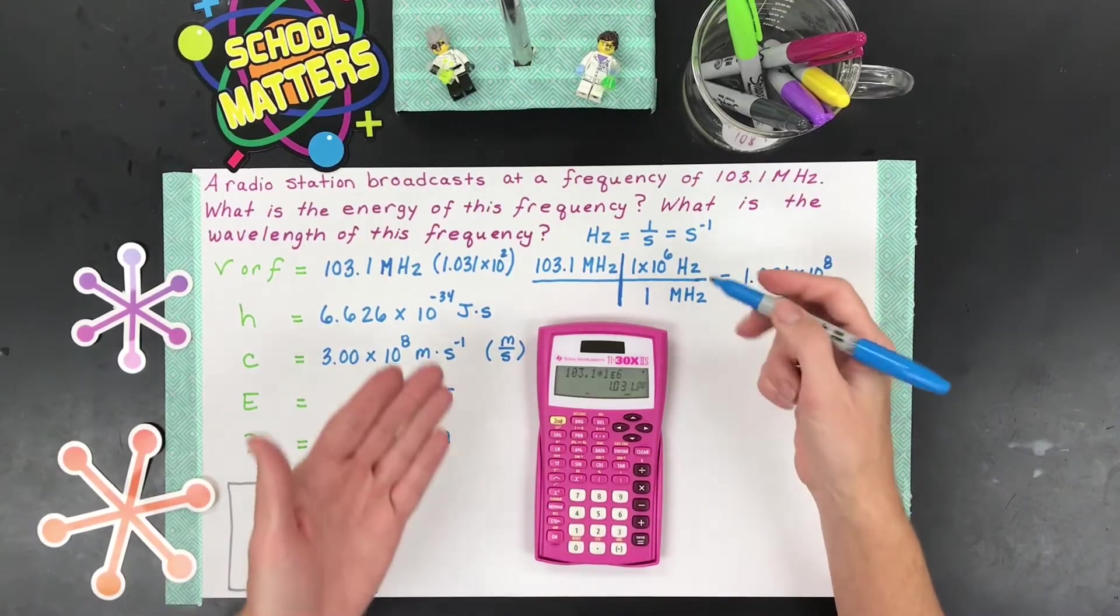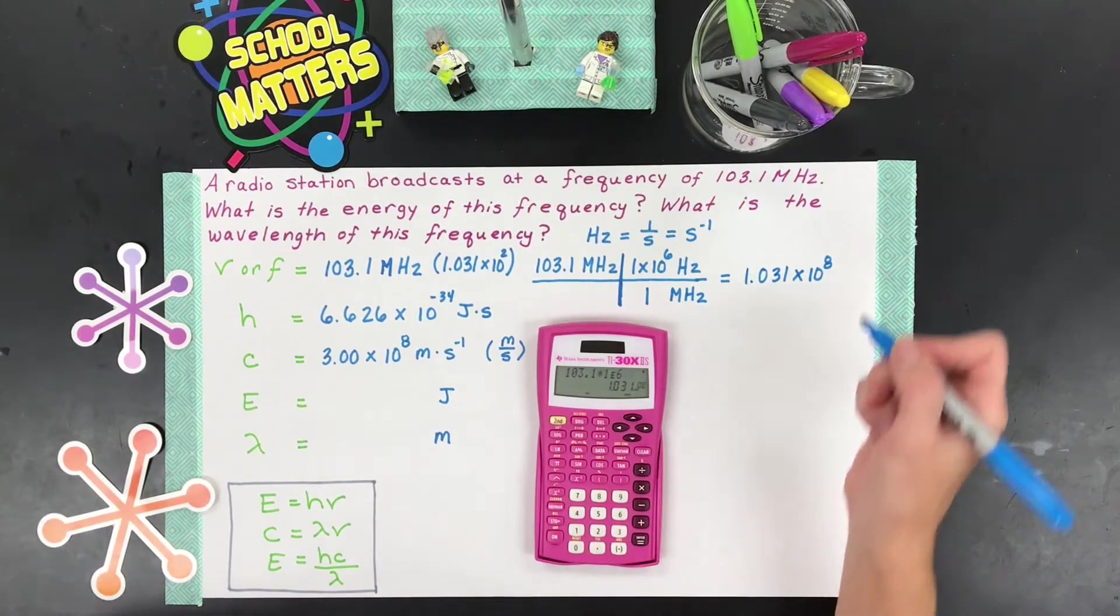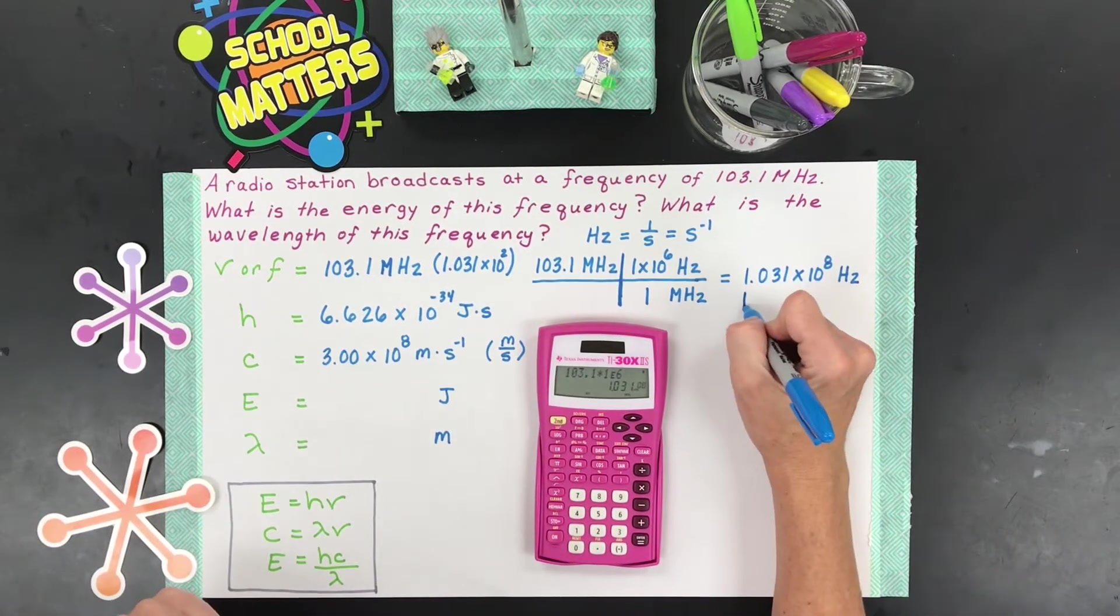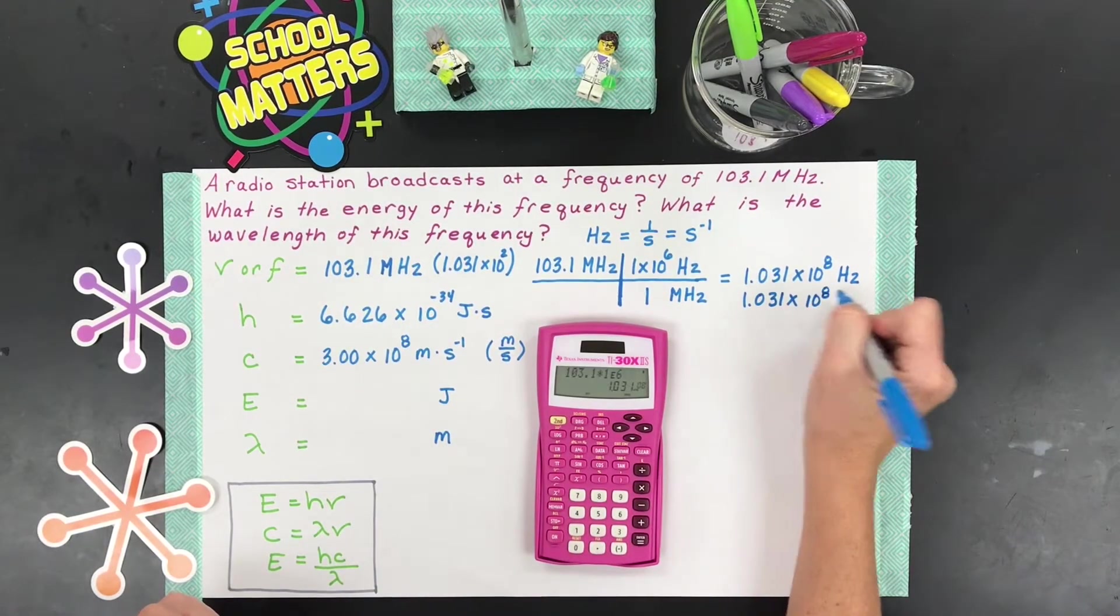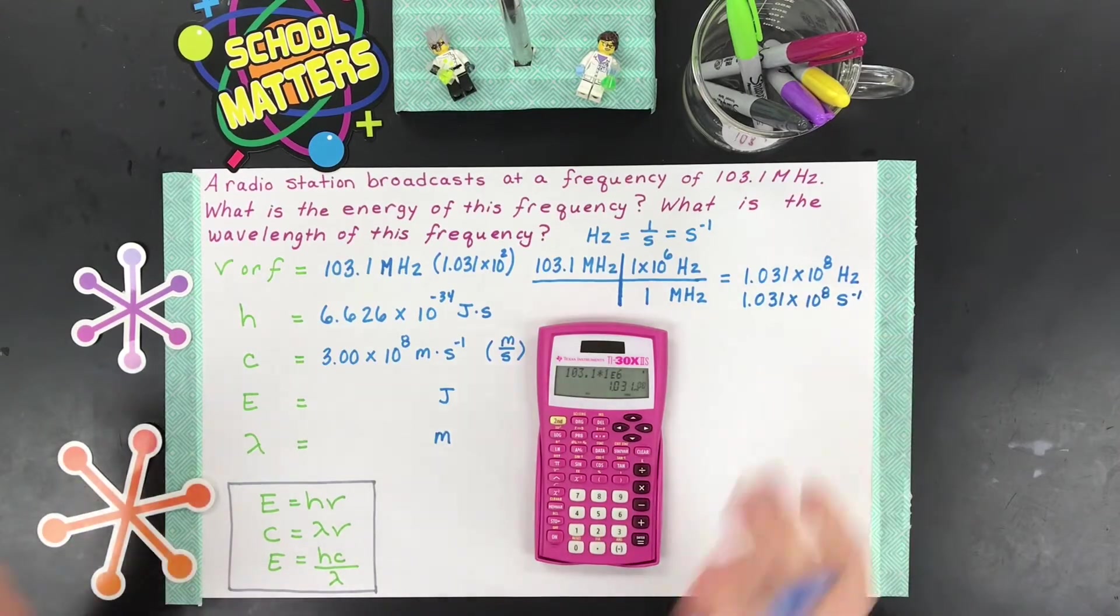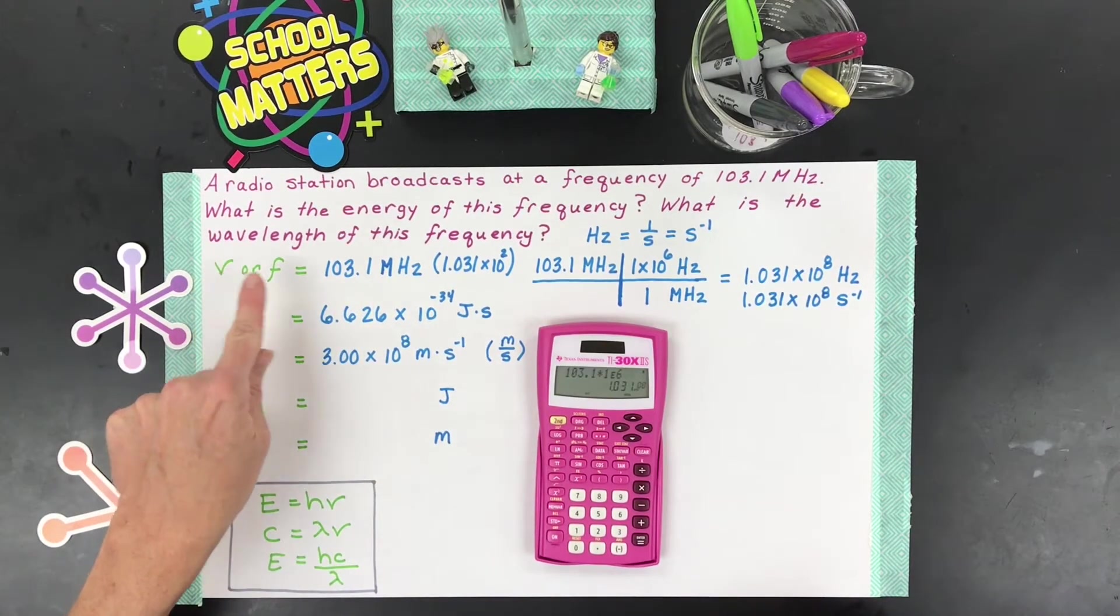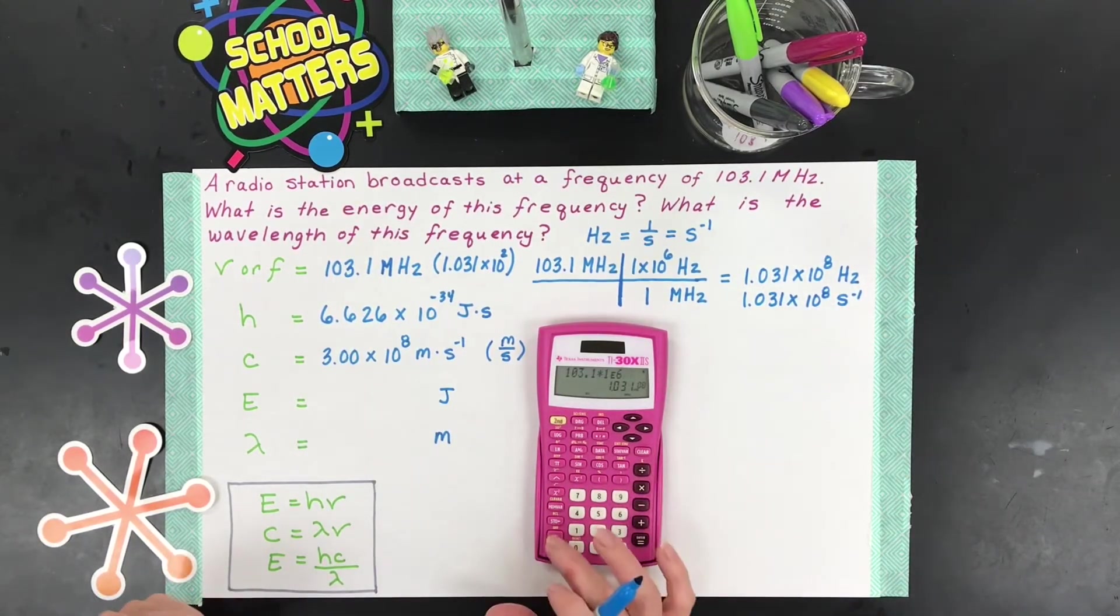And so I end up getting 1.031 times 10 to the 8th. And remember, if you were to win the megabucks, you'd win a million dollars. So that's kind of how I tell my students to remember that. And then that's hertz. So the other thing is this 1.031 times 10 to the 8th second minus 1. Same thing. So now we've got our frequency in the right unit, and we have it in hertz per second.